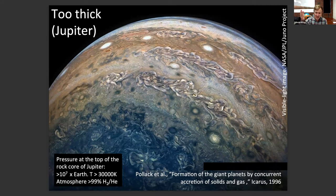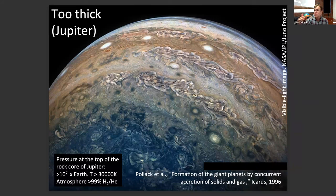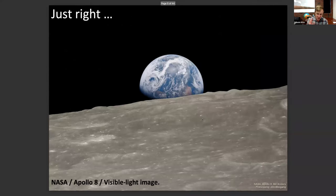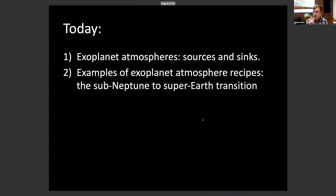As we go down through Jupiter's hydrogen-helium-dominated atmosphere, we pass through the temperature range consistent with liquid water, staying in the gas phase, and we pass into plasma. Jupiter formed by gas accretion onto a seed of rock and water ice. Though we can still see the gravitational signature of that seed at Jupiter's core, the temperature and pressure were far too high for either the solid or liquid state. Only Earth in our solar system has the right conditions for surface liquid water. Today I'll introduce exoplanet atmosphere sources and sinks, then talk about the sub-Neptune to super-Earth transition as an example of exoplanet atmosphere recipes.